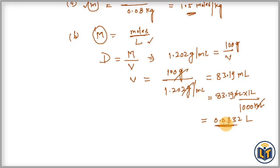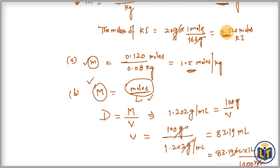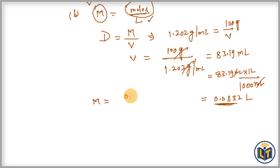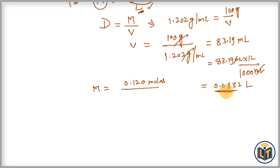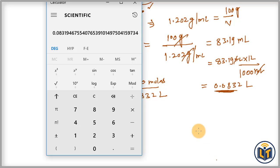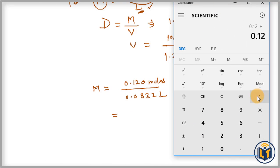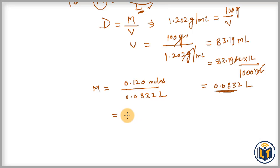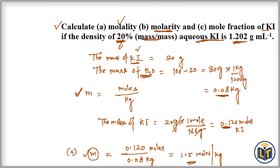Now we apply the molarity formula. Molarity equals moles of solute (0.120 mol) divided by volume of solution in liters (0.0832 L). Dividing 0.120 by 0.0832 gives us 1.44 mol/L. This is the molarity of the solution.